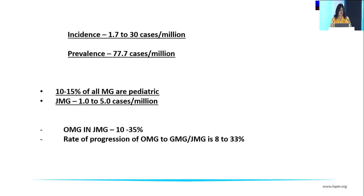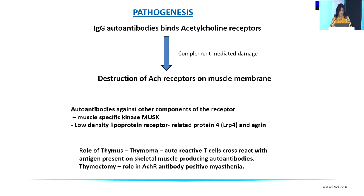The pathogenesis involves binding of acetylcholine receptors by IgG autoantibodies, complement-mediated damage, and destruction of ACh receptors on the muscle membrane. Additionally, muscle-specific kinase (MuSK) receptors and LRP4 (low-density lipoprotein receptor-related protein) — more prominent in pediatric myasthenia — are also affected by autoantibodies. The thymus also plays a role: thymic hyperplasia leads to autoreactive T cells that cross-react with antigen and produce autoantibodies. Thymectomy therefore has a role in ACh receptor-positive myasthenia.